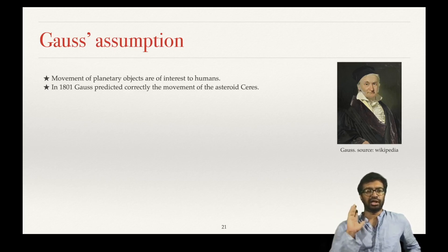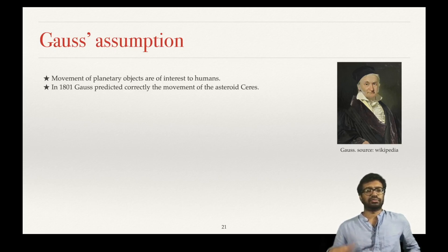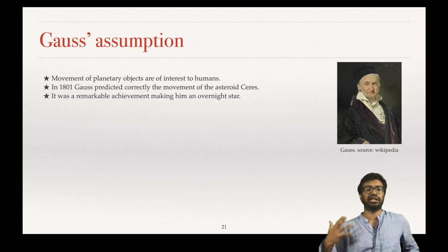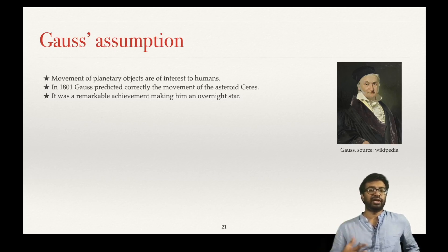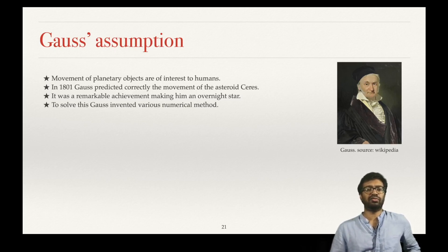Gauss was trying to predict the path of planetary objects, and he correctly predicted the movement of asteroid Ceres. Ceres got behind the sun and was lost — no one knew if it would come back. Gauss predicted exactly when it would reappear. This happened in 1801 and turned Gauss into an overnight star. His mathematical abilities became renowned, and to find the path of Ceres, Gauss invented a lot of numerical methods.